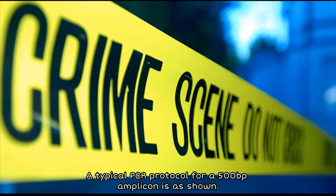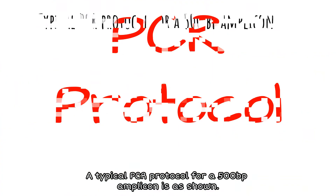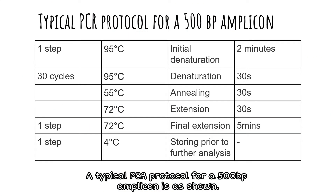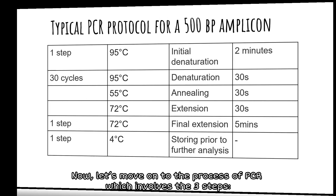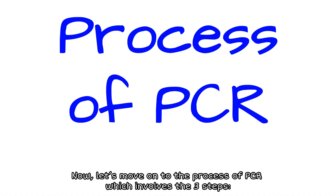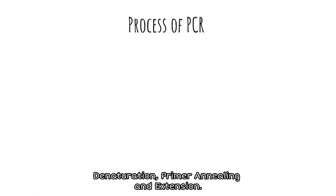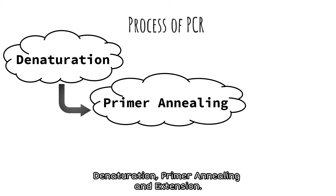A typical PCR protocol for a 500 base pair amplicon is as shown. Now, let's move on to the process of PCR, which involves three steps: denaturation, primer annealing, and extension.